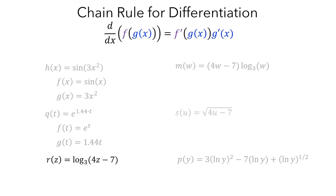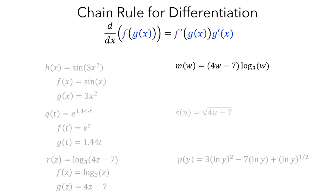For r, the logarithmic function might look unfamiliar, but you can use log base 3 of z as the outside function, and 4z minus 7 as the argument. m looks a lot like r. However, in this example you're not composing two functions. Instead, you're taking the product of 4w minus 7 and the log base 3 of w. So you'd need to use the product rule rather than the chain rule to compute the derivative of m.